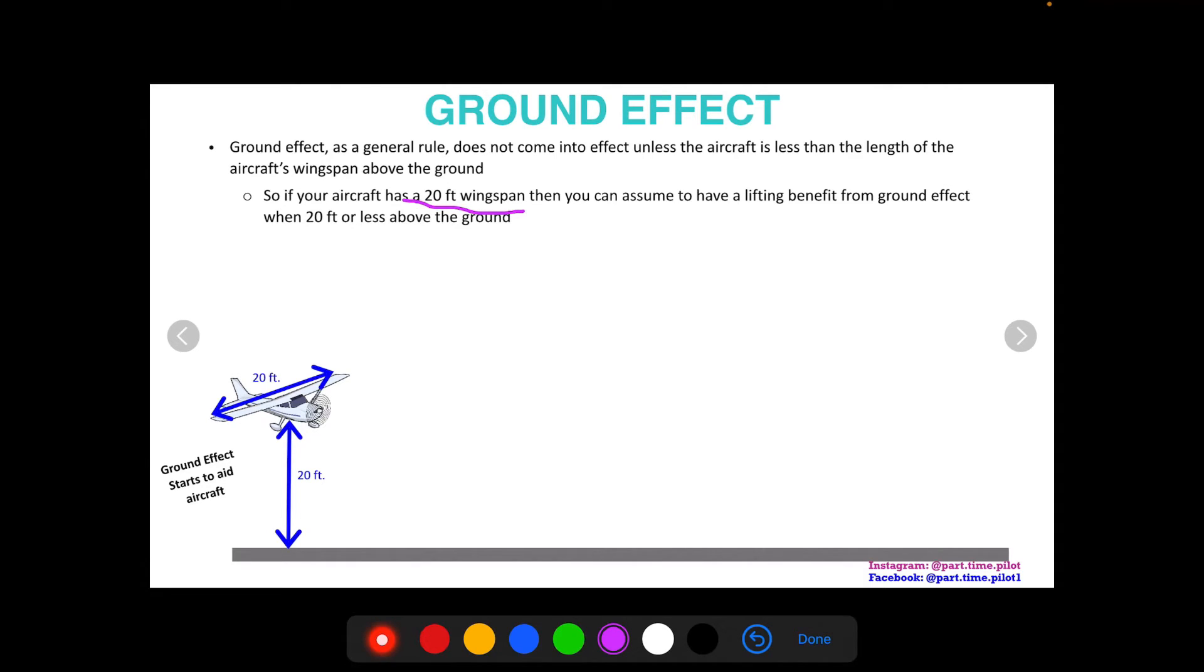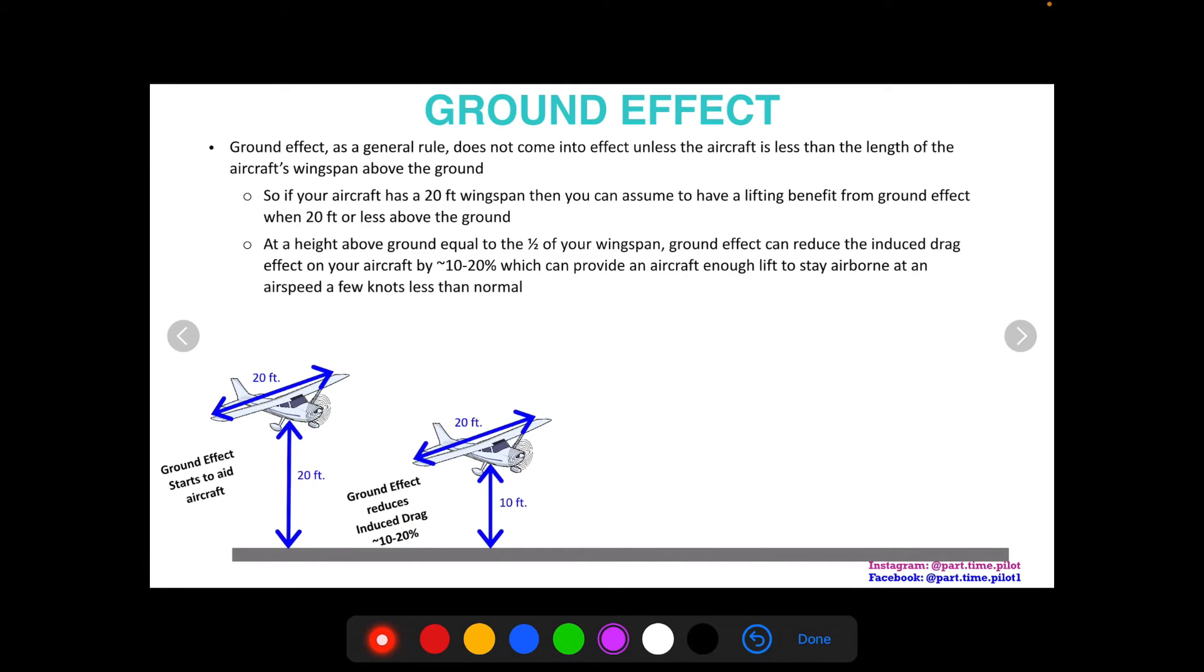When your wingspan is 20 feet and you're that same distance above the ground, ground effect starts to aid your aircraft. But at this distance equal to your wingspan of 20 feet, the effect would be very small. But as you get closer, the effect increases. So when you're half the distance of your wingspan above the ground, so in this example your wingspan is 20 feet and we're 10 feet above the ground, that's half our wingspan. The ground effect can reduce induced drag around 10 to 20 percent.